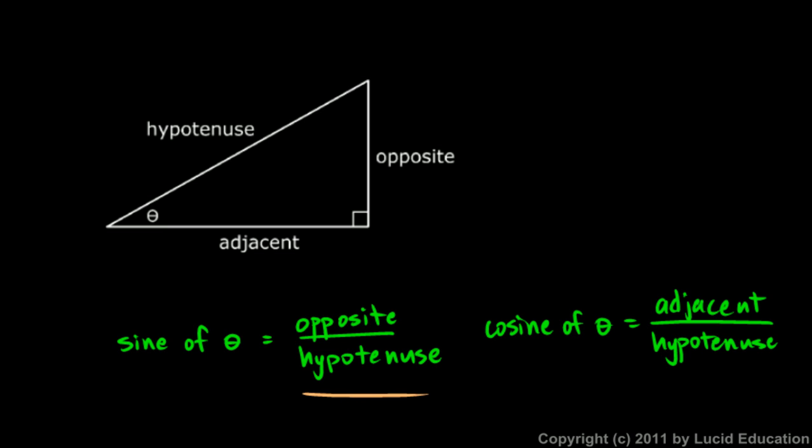And the cosine of theta is the length of the adjacent side divided by the length of the hypotenuse. Those ideas should be memorized - that's the sine ratio and the cosine ratio. They're not hard to memorize, and you will memorize them just by using them a lot in the next few lectures.